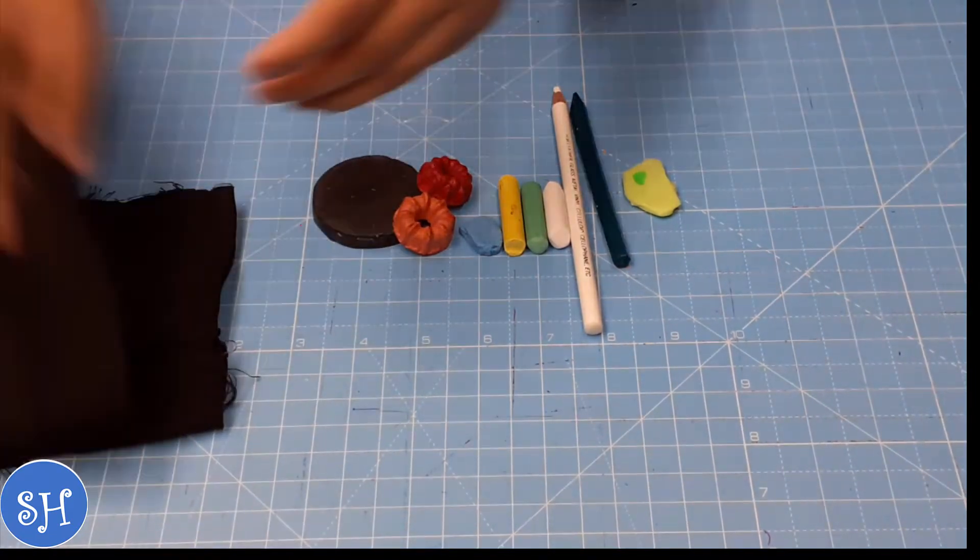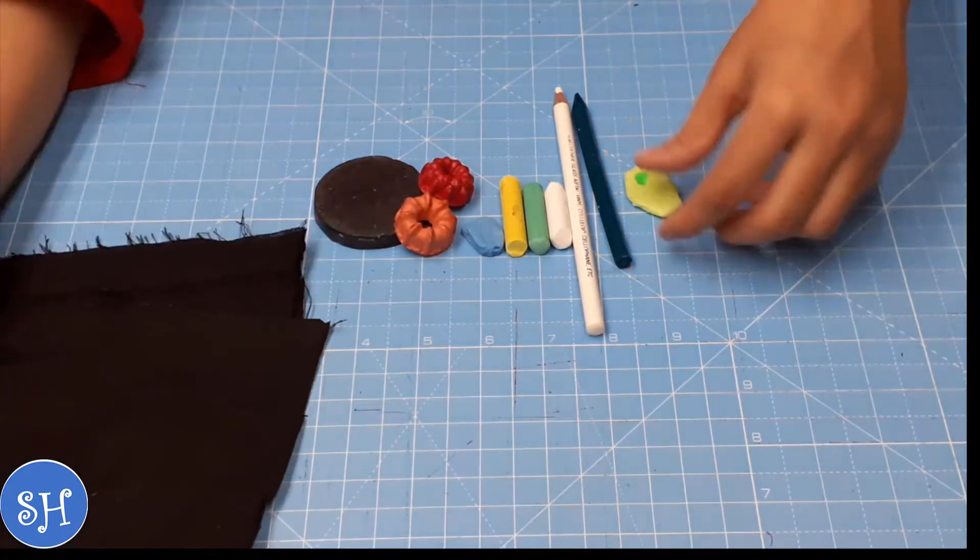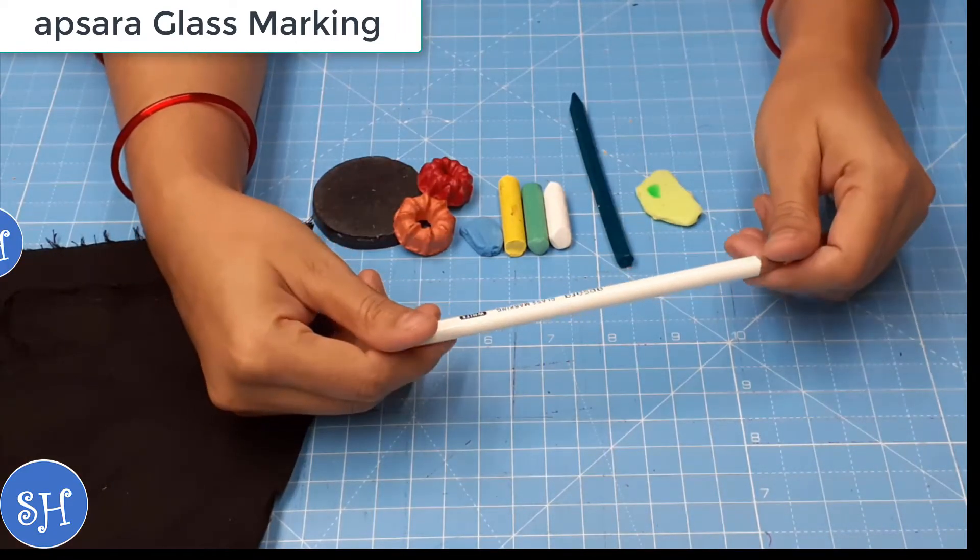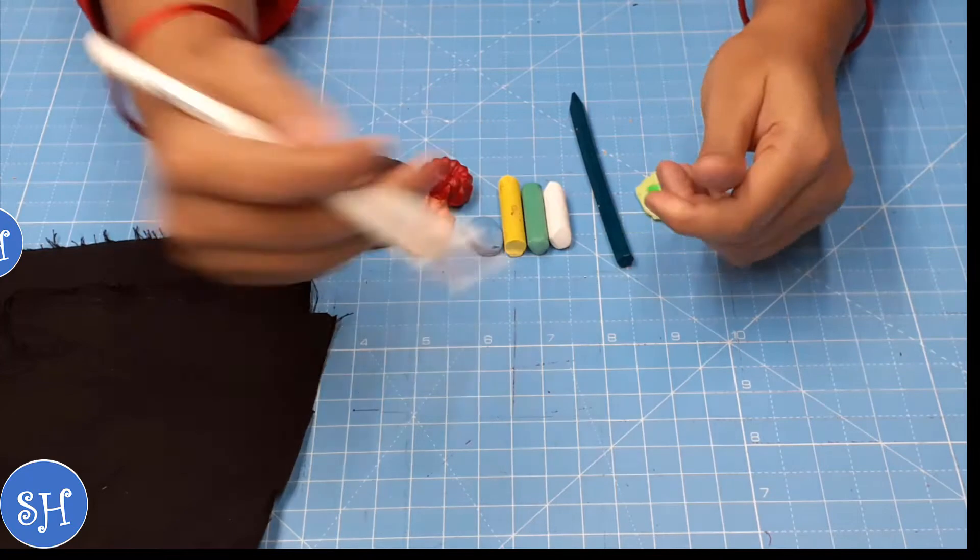First of all, I will tell you about white color. There are many colors available. I will tell you about white color and black color.